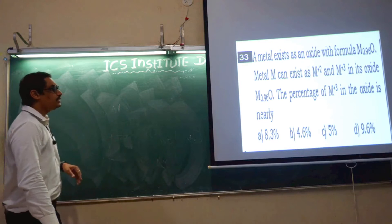The next question. Metal M exists as an oxide with formula M0.96O. Metal M can exist as M2+ and M3+. That means it is a non-stoichiometric compound. The percentage of M3+ in the oxide is what we need to find. This is a similar question to NEET 2019, slightly changed.